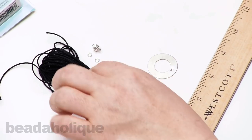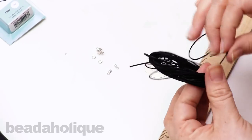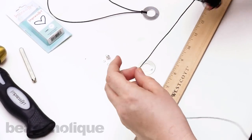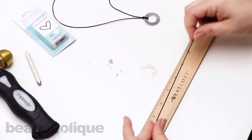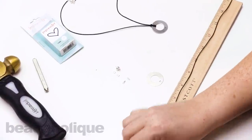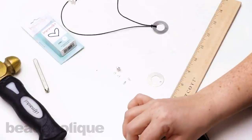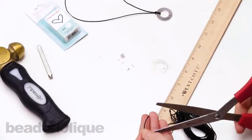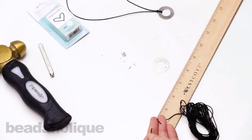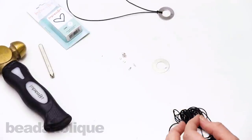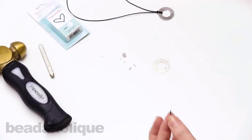So now take your ruler and you're going to take your cotton cord. And for as long as you want your necklace, go ahead and measure that length. I'm going to do about a 16 inch necklace. So I'm going to get 16 inches of my cord here. Take my scissors and just snip that off.